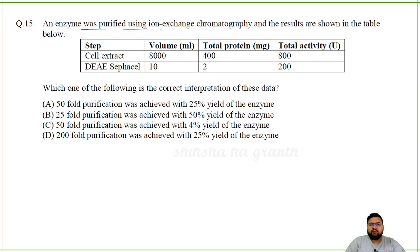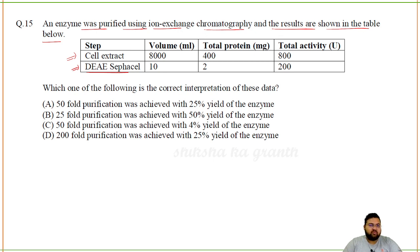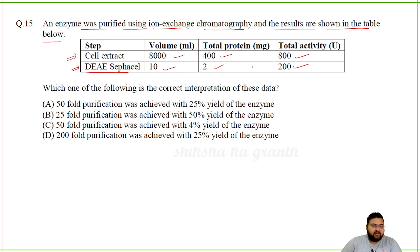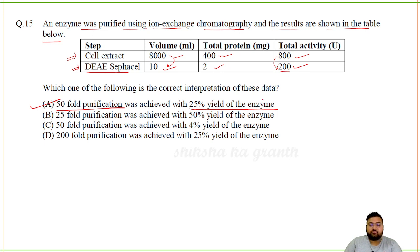An enzyme was purified using ion exchange chromatography. Cell extract: volume 8000 ml, total protein 400 mg, total activity 800 units. After DEAE purification: 10 ml, 2 mg protein, 200 units activity. Purification fold = (200/2) ÷ (800/400) = 100/2 = 50-fold purification. Percent yield = 200/800 × 100 = 25% yield.